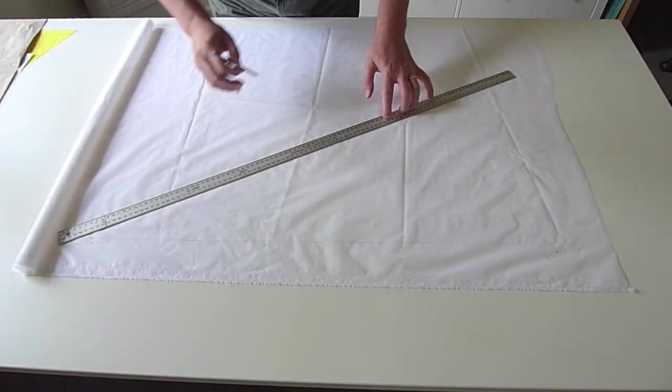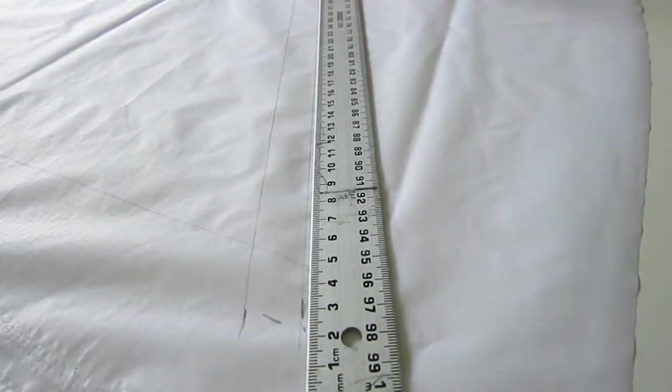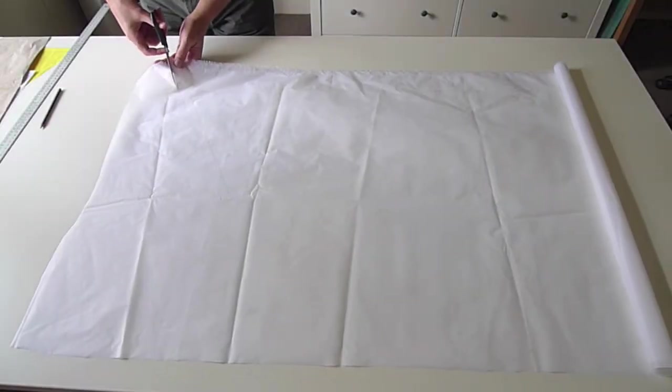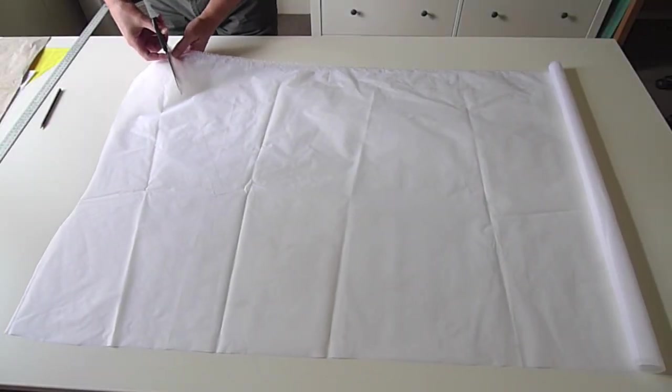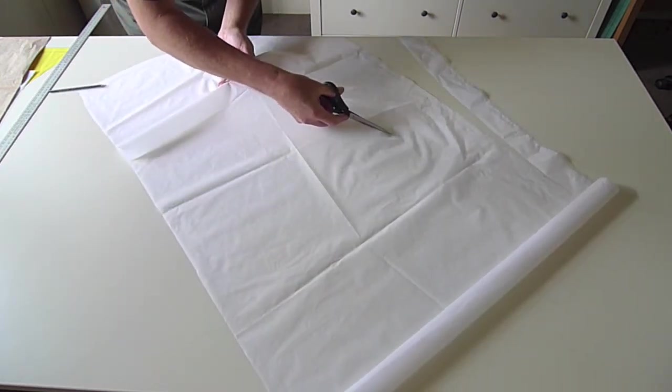You cut out along that seam allowance and if you have a decent pair of scissors you can just zoom along. It doesn't have to be all that accurate.